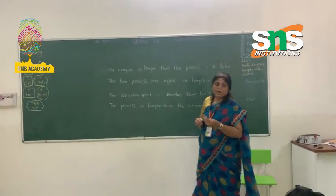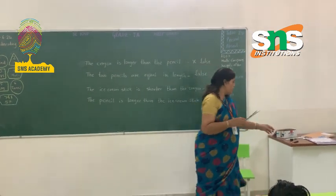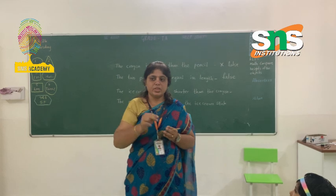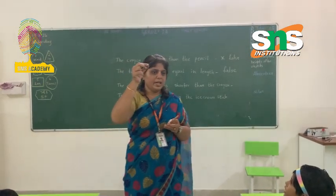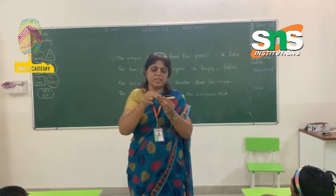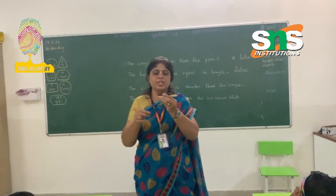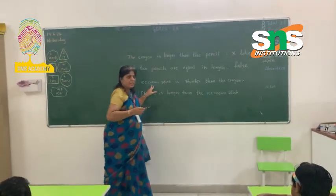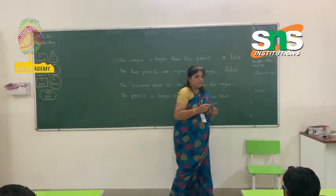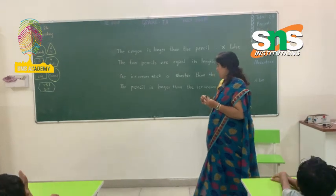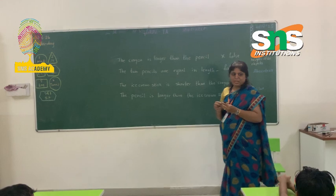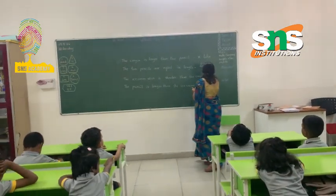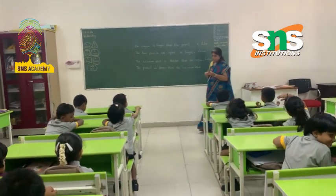Now we are going to find out these two objects. What is this? Ice cream stick. And we can check the length of this ice cream stick and the crayon. Which is the longest here? Ice cream stick. Which is the shortest? Crayon. Crayon is the shortest. The statement given for us is: the ice cream stick is shorter than the crayon. False or true? False. Very good. The ice cream stick is actually longer than the crayon.